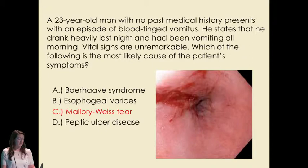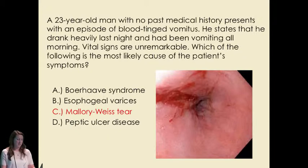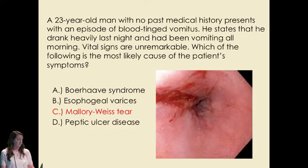Mallory-Weiss tears usually occur after a very forceful bout of emesis or even coughing. The lesion goes through the mucosa and submucosa, so it's very superficial — usually about one to four centimeters. Most occur in the stomach, but about 25% occur at the gastroesophageal junction. It's usually mild and self-limited, but 3% of deaths from upper GI bleeding result from a Mallory-Weiss tear.